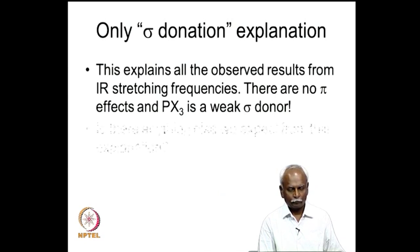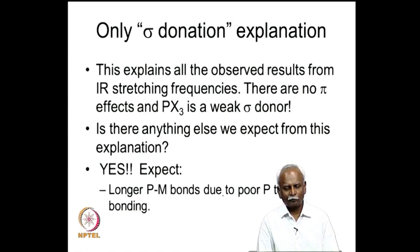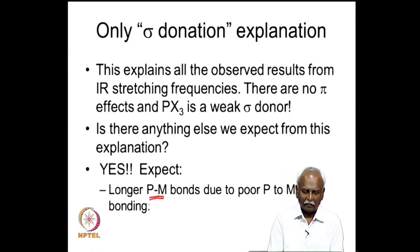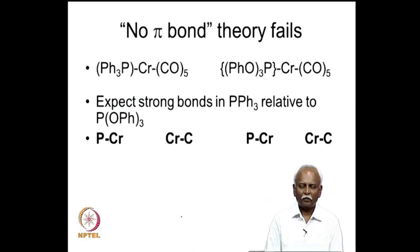However, it is possible to explain the stretching frequencies but not the bond distances. If you look at the bond distances between phosphorous and the metal, one would expect longer P–M bonds due to poor sigma donation for a weak donor, and shorter bonds for strong sigma donation. But what is observed is the opposite of what you would expect. This is where the no-pi-bond theory fails.